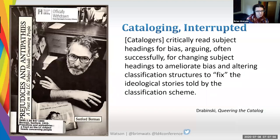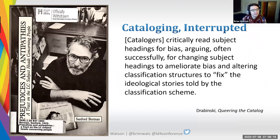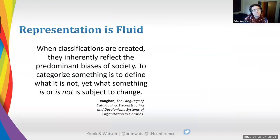Drabinski gives this back story: the radical cataloging movement began in 1971 with Sandy Berman's 'Prejudices and Antipathies.' Radical cataloging is, quote, critically reading subject headings for bias and arguing, often successfully, for changing the headings to ameliorate bias. You might be familiar with the work of Violet Fox, Nathaniel Gagnon, and Mark Kold on Twitter. But as Drabinski notes, this can be a losing game, and I don't think either Emily or I would disparage the work of radical catalogers today — it's still very necessary.